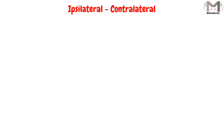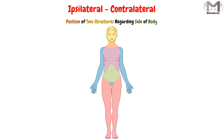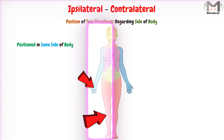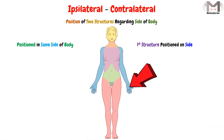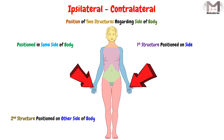These two terms, the ipsilateral and the contralateral, will describe the position of two structures regarding the side of the body — specifically whether the two structures are positioned on the same side of the body, or if one structure is positioned on one side while the other structure is positioned on the other side of the body.